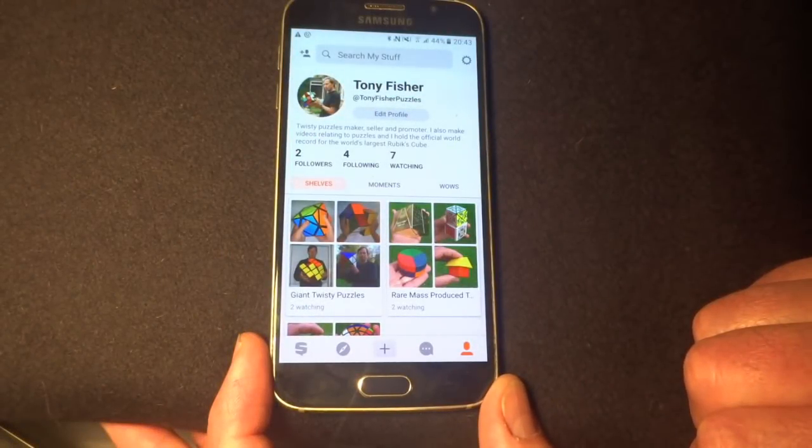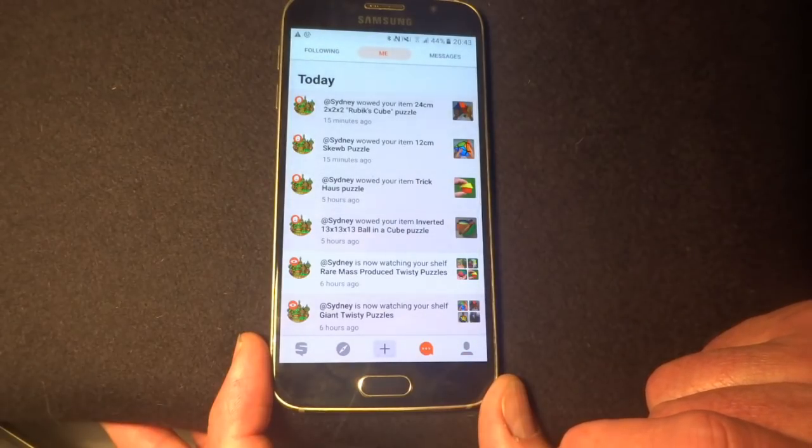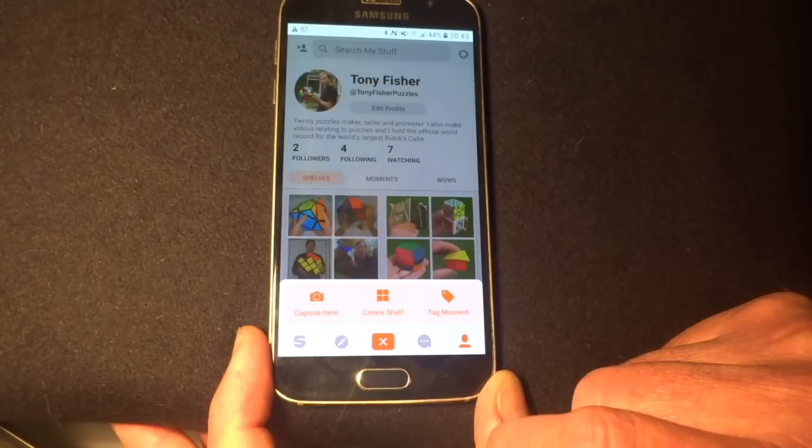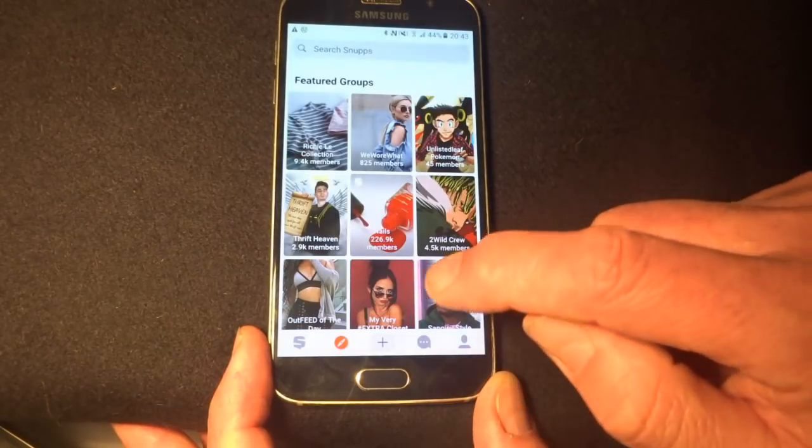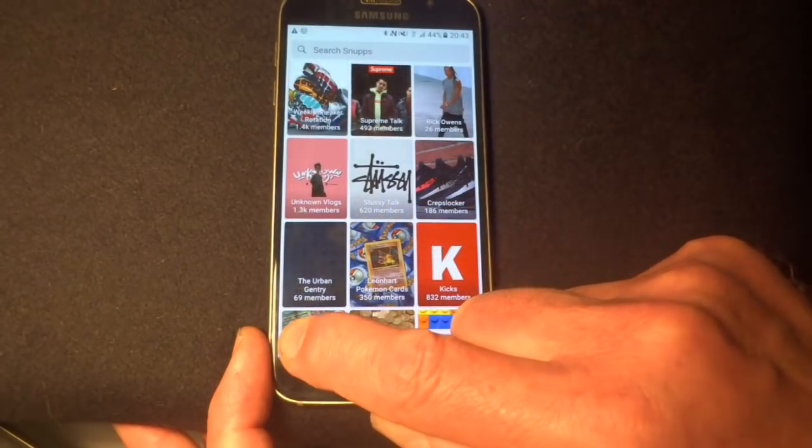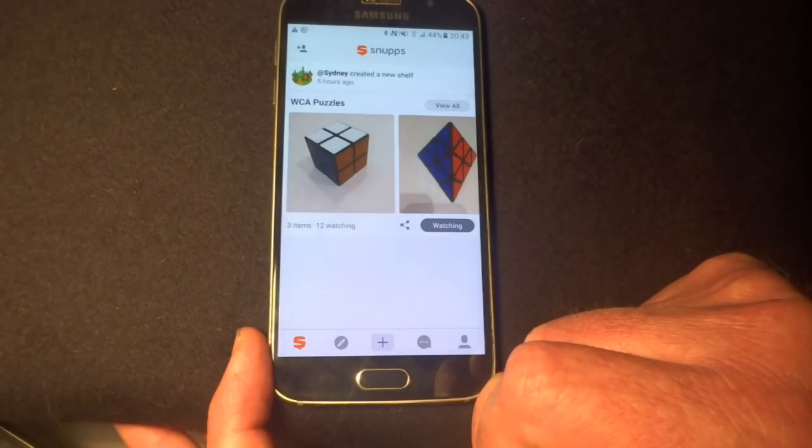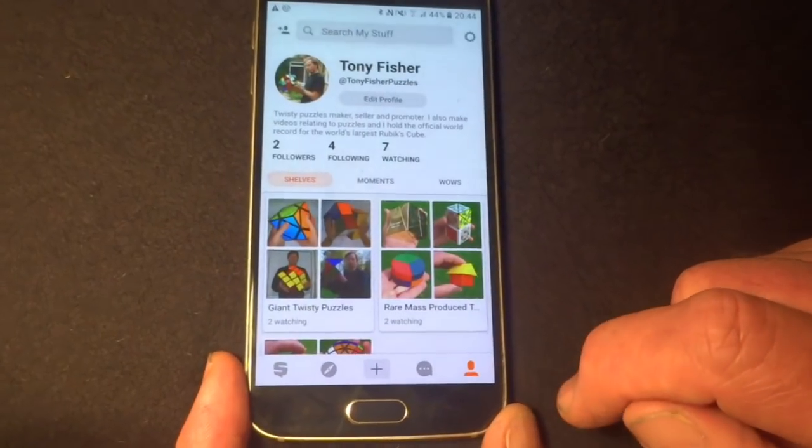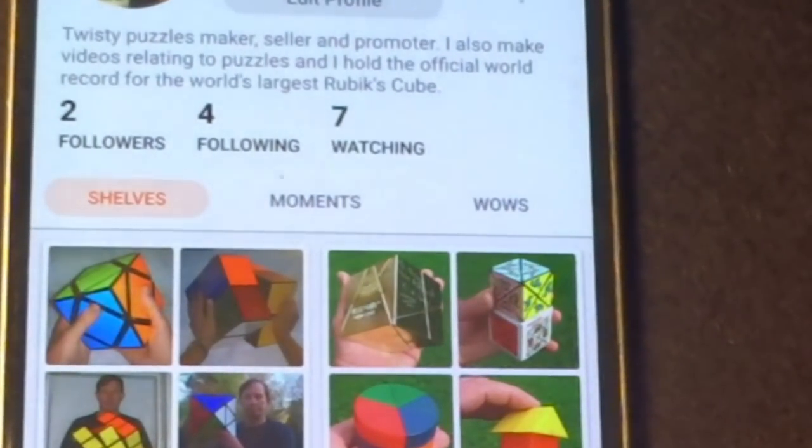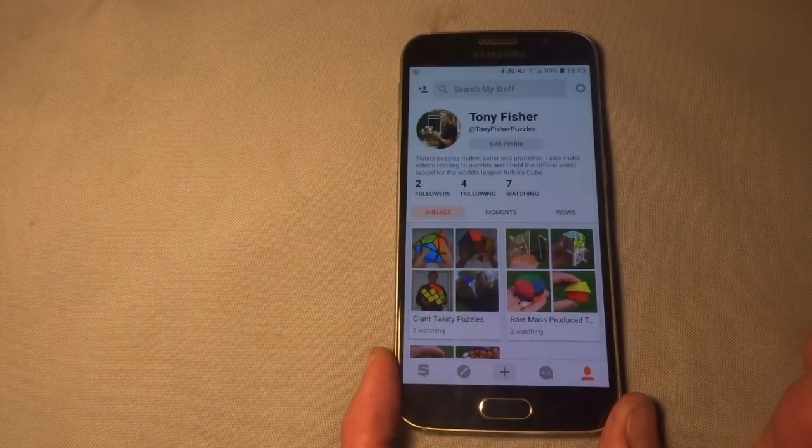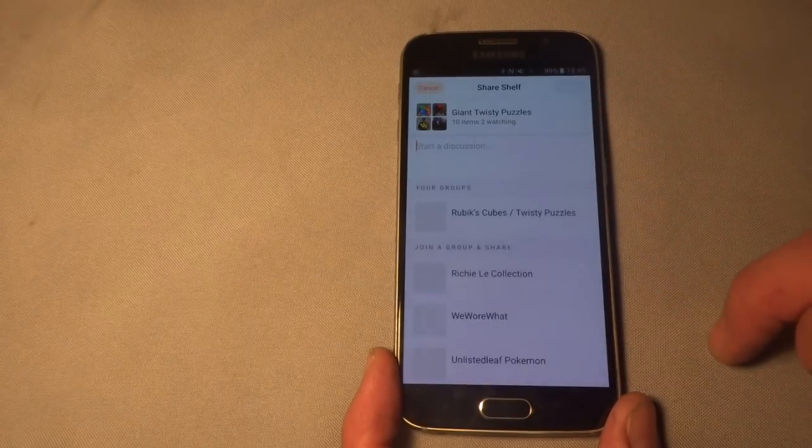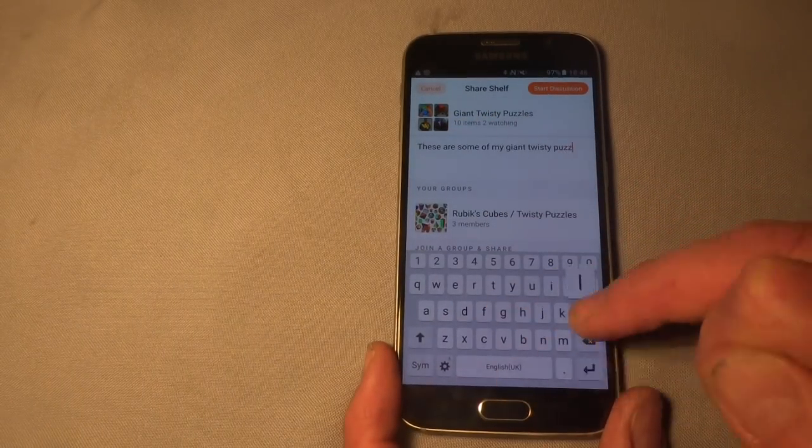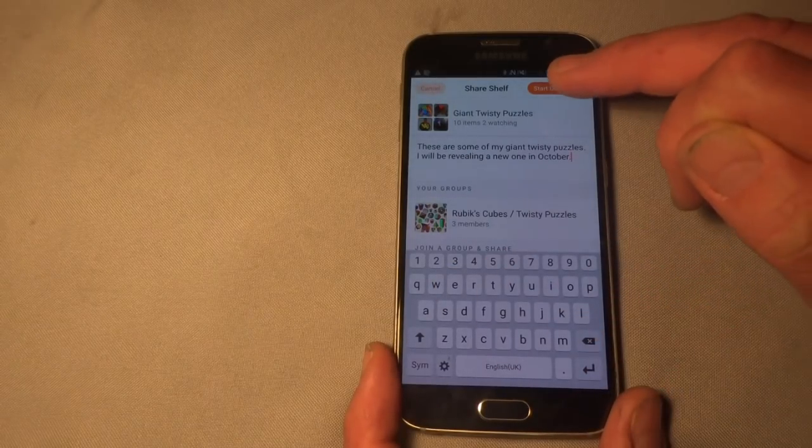At bottom right is a me button, which takes you to your homepage. Next to that is activity, which is pretty self explanatory. In the middle is a plus button, which gives you three options: take a photo, create a shelf, or tag a moment. The next button along is explore. This is for browsing groups, shelves and photos. And the far left button is the Snupps feed. This is similar to activity, but tells you stuff like when someone has created a new shelf. Two other things you need to know about are wows and moments. Wows are the same as likes on Facebook, and Snupps says moments allow you to share memories associated with your stuff. How to share: select shelf or photo, tap share to group, and choose the group. Add some text. Tap start a discussion. Done.